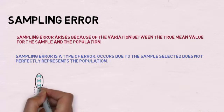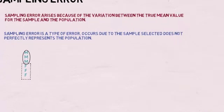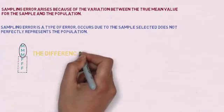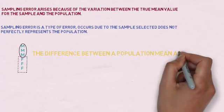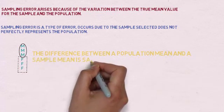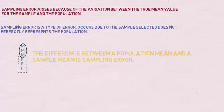or the last three, the sampling error occurs here because there is a variation between the mean of the sample and the population. So now we get to know that sampling error is the difference between a population mean and